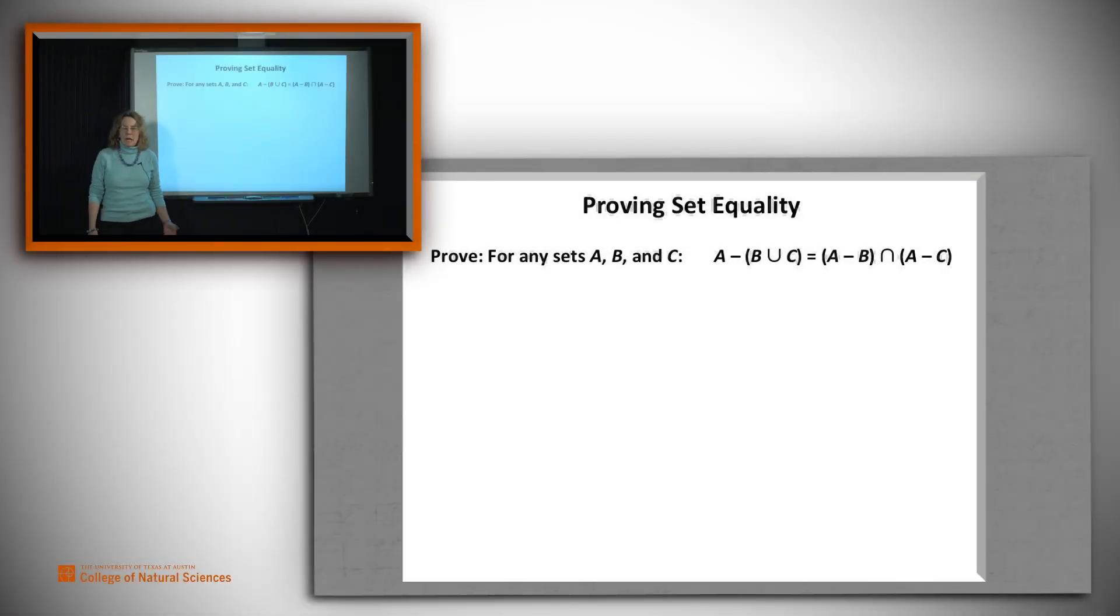Suppose we want to prove a non-trivial claim about set equality. In this example, we have three sets A, B, and C. And we want to show that A minus B union C must equal A minus B intersect A minus C.